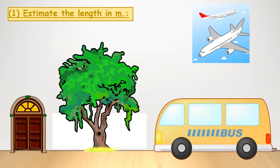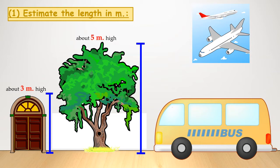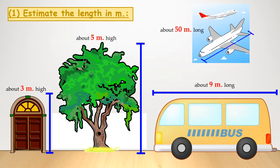We have door, tree, bus and an airplane. This door is about 3 meters high. And estimate this tree high. It will be 5 meters high. This bus, it's about 9 meters long. This airplane, it will be about 15 meters long.